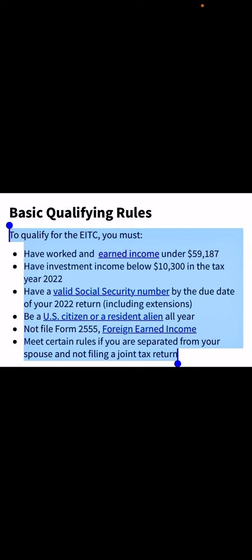You must also have investment income below $10,300 in tax year 2022, have a valid Social Security number by the due date of your 2022 tax return including any extensions, be a U.S. citizen or resident alien all year, and not file Form 2555 foreign earned income. You must also meet certain rules if you are separated from your spouse and not filing a joint tax return.